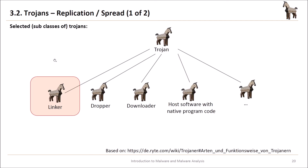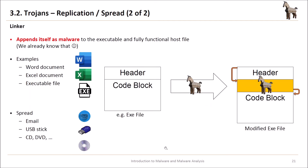Here are some selected subclasses of Trojans. We have the linker, which links itself to a program. Then we have the dropper, which drops additional malware on your computer. We have the downloader that downloads additional malware. And we have host software with native program code, where the Trojan is directly integrated with its malicious function in the native program. A linker appends itself as malware to an executable and fully functional host file — examples are Word documents, Excel documents, or exe files. Trojans spread via email, USB stick, CD, DVD, and so on.